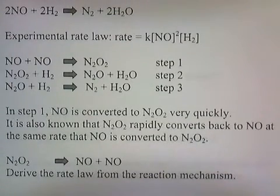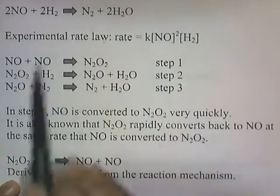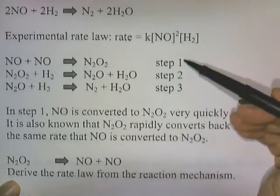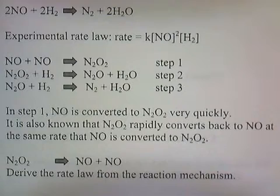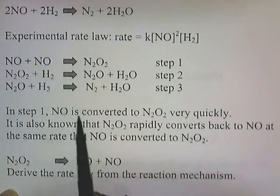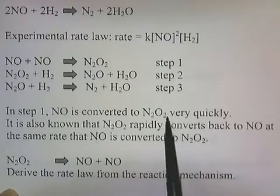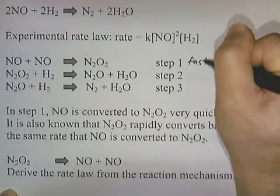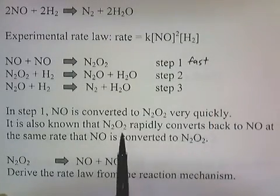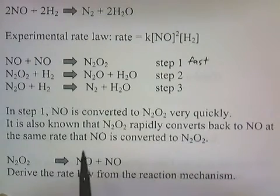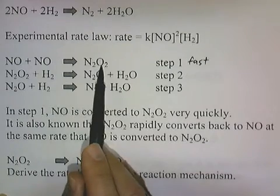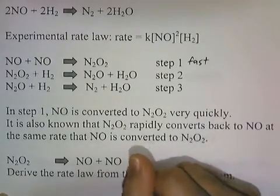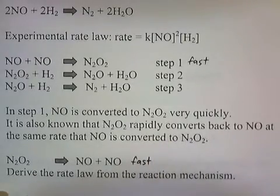Here's a new problem. We have a chemical reaction and the experimental rate law is K[NO]²[H2]. This is our proposed reaction mechanism, and we're told that NO is converted to N2O2 very quickly — that reaction occurs fast. It's also known that N2O2 rapidly converts back to NO at the same rate that NO is converted to N2O2, so the reverse reaction also occurs very quickly.